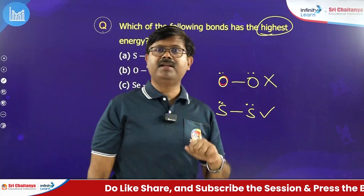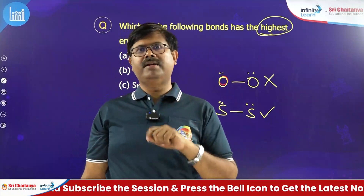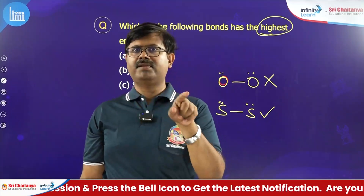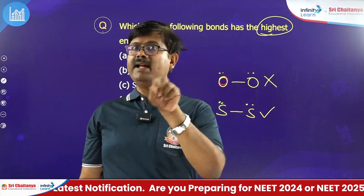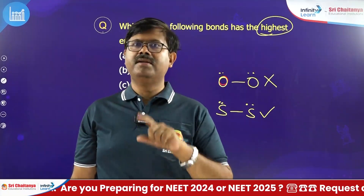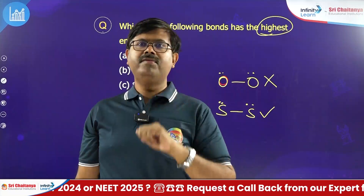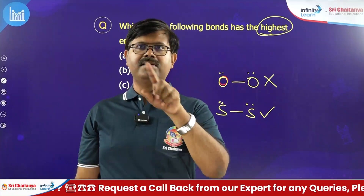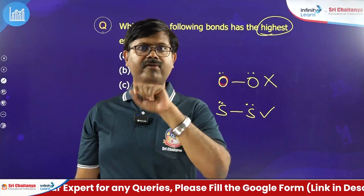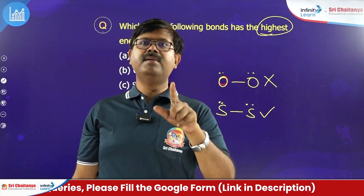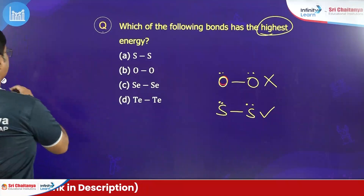And not only here — in group 15 also, comparing the N-N single bond and P-P single bond, not nitrogen-nitrogen but the P-P bond is the strongest. Similarly, in halogens, comparing F-F and Cl-Cl, not the F-F bond is strong — Cl-Cl bond is stronger than the F2 bond. Keep that in mind.